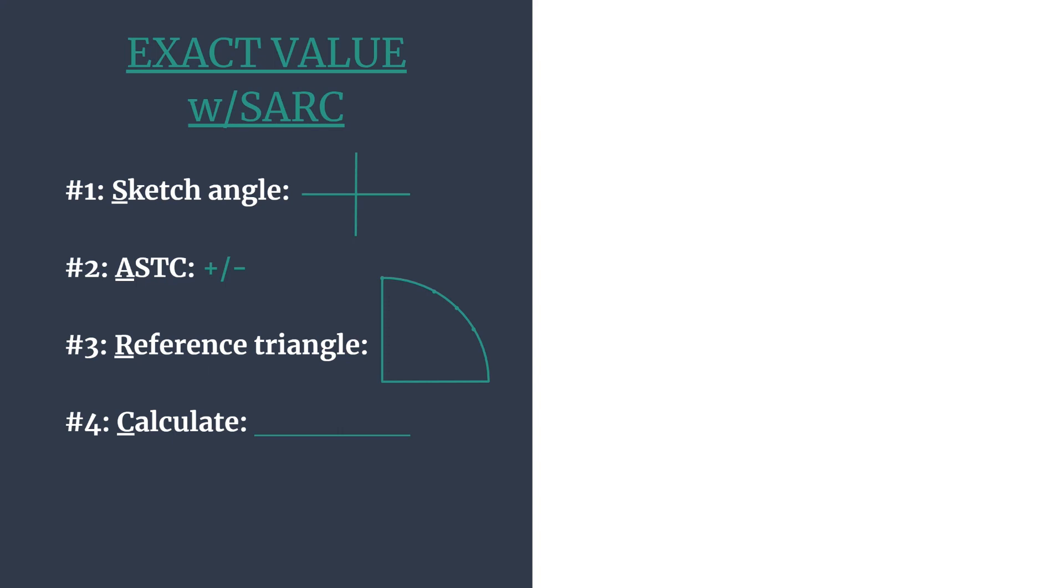Breaking it down quickly before we begin, the S stands for sketch the angle. We really just care about the terminal side here. The A stands for ASTC, which is another acronym, and this one helps you decide which trig functions are positive in each quadrant. Then you'll be able to make a final determination for your answer, should it be positive or negative, and that way you don't have to worry about it for any of the other steps.